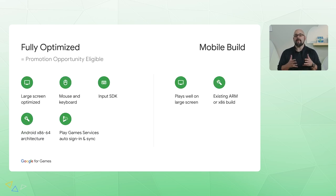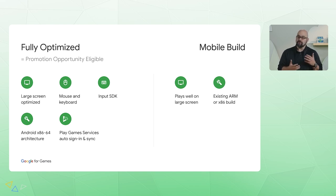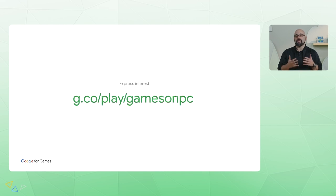Starting today, we're making it much easier to join Google Play Games for PC with your existing mobile build — no need to recompile for x86 right away. Fully optimized games are the best for users and qualify for unique cross-platform marketing and promotion. But if you're still working on those optimizations and want to reach players faster, we now offer the option to submit your mobile build in the meantime. You can let us know you want to participate at the link that you see here.